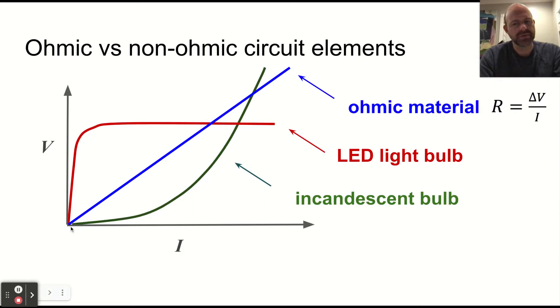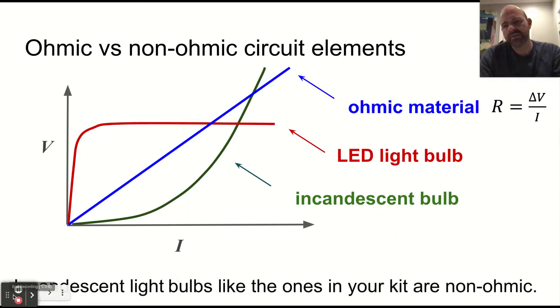Incandescent bulbs sort of do this. As you increase the voltage, you get this kind of uneven change in current, which is interesting. And so incandescent light bulbs, like the light bulbs in your kit, are non-ohmic.